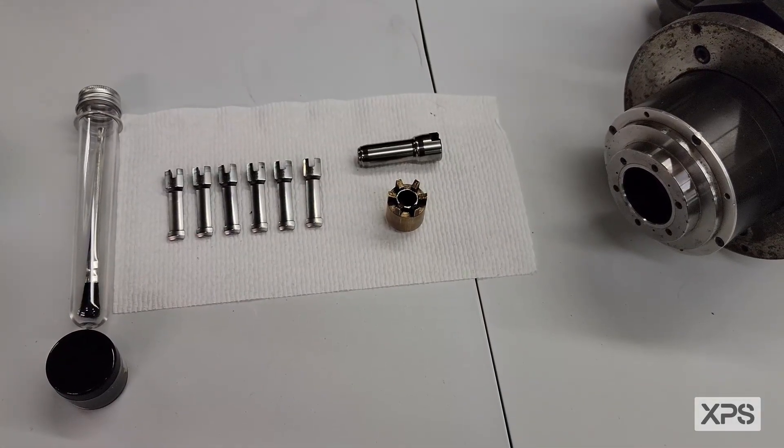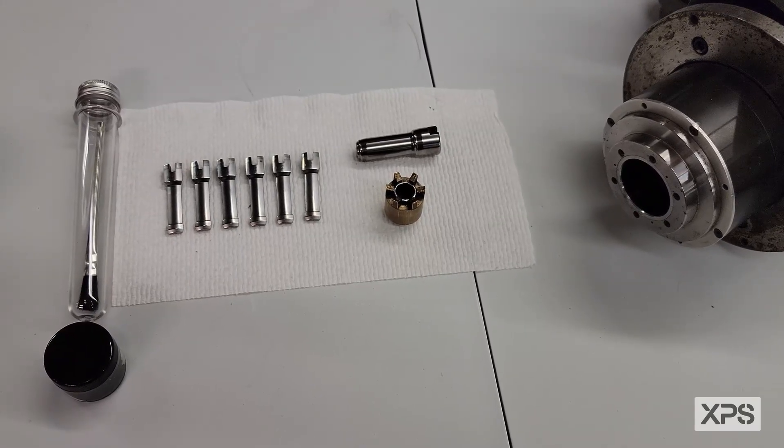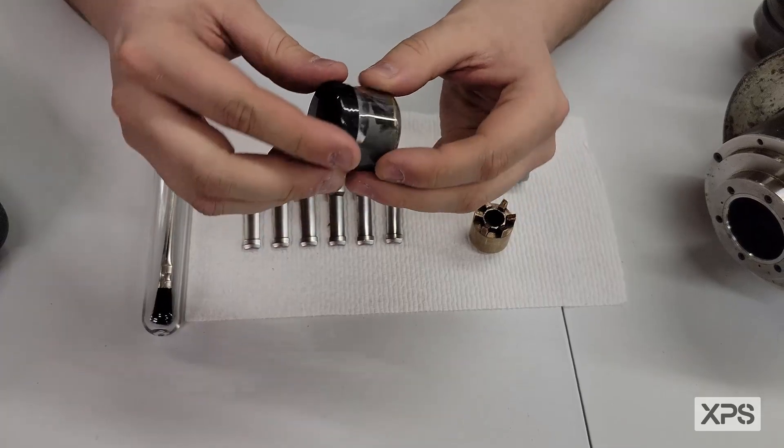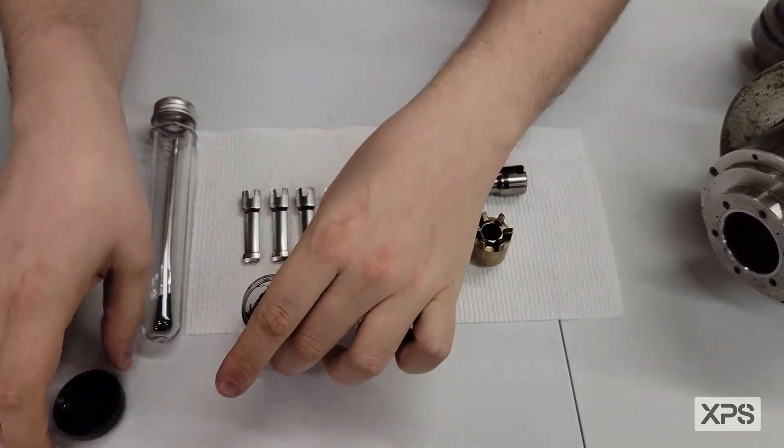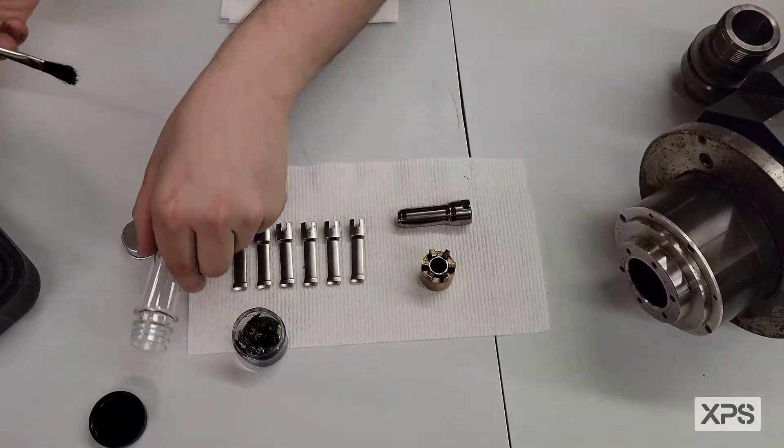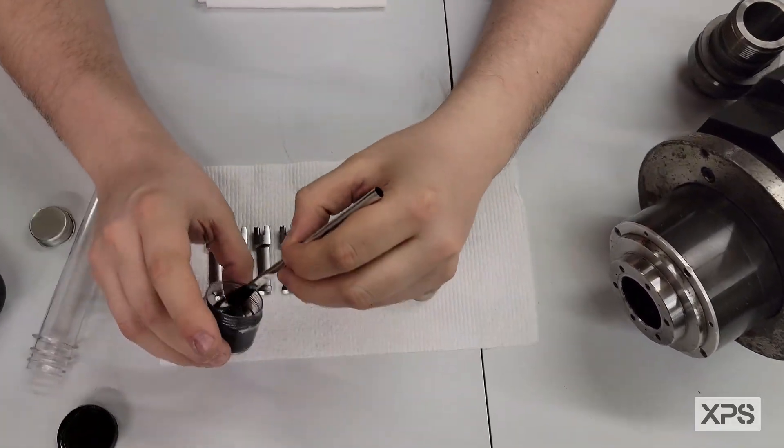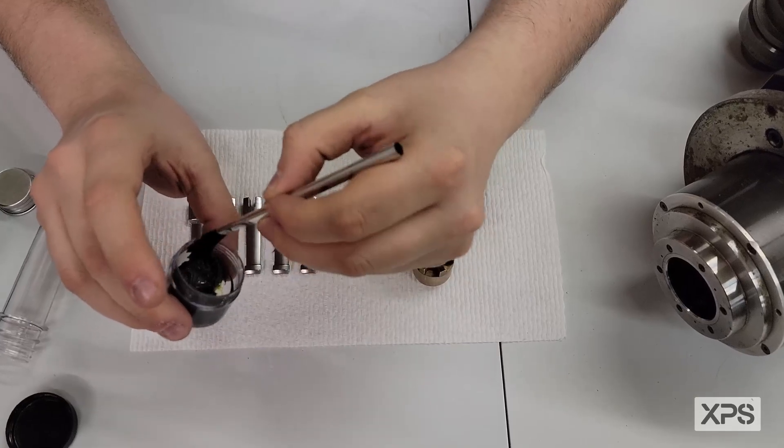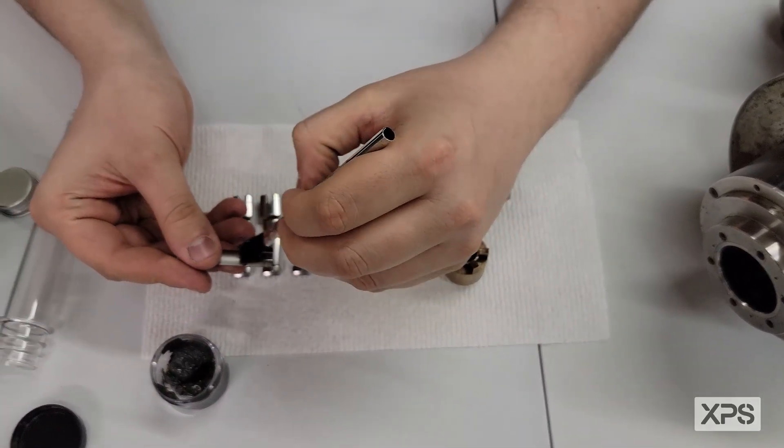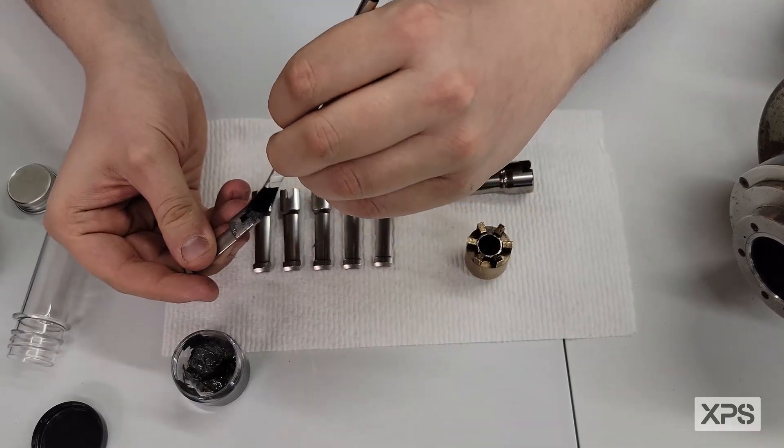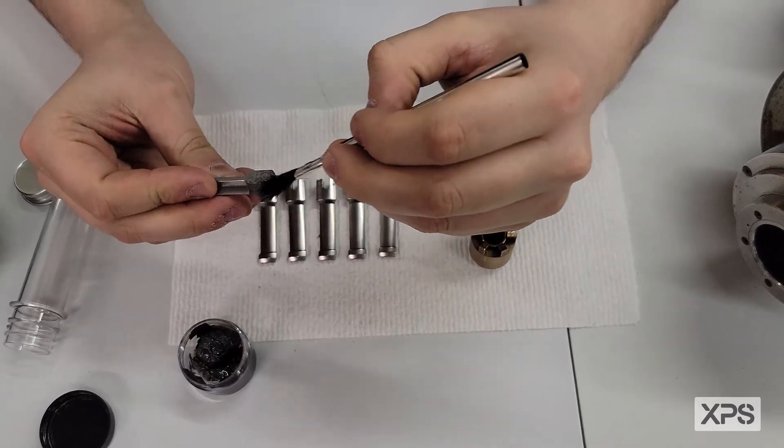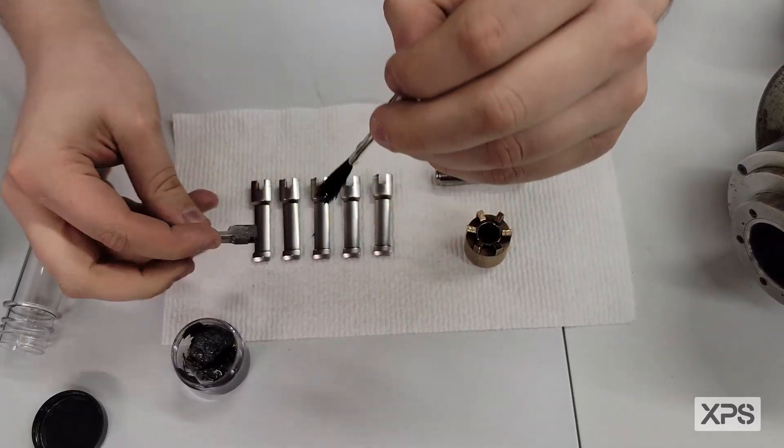Once you've fully inspected your components, you're going to want to get ready for the reinstallation. Take the included Metaflux container and the brush and we'll apply these to the wear points of the fingers. Take a little bit of it, not a lot. This stuff goes a long way. Do this to each finger.